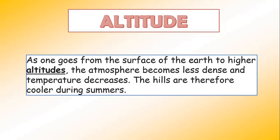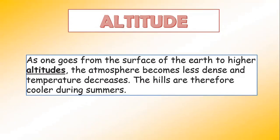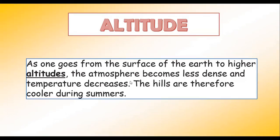Next is altitude. Altitude is the height from the Earth when you go upwards. As one goes from the surface of the Earth to higher altitudes, the atmosphere becomes less dense and the temperature decreases. Therefore, the hills are cooler during summers.